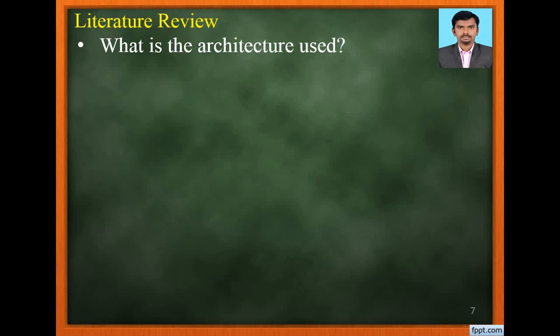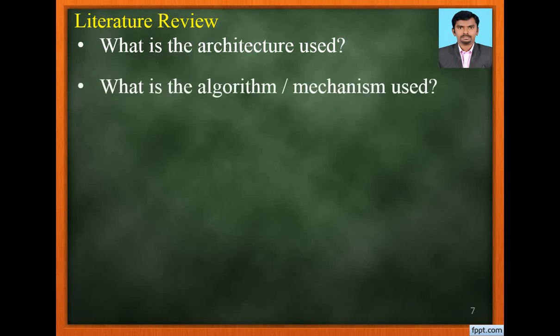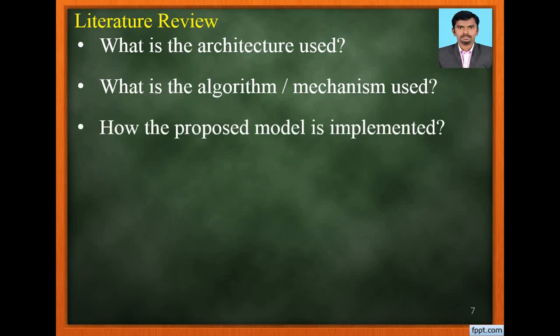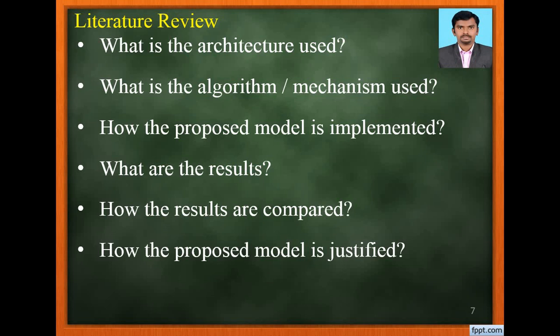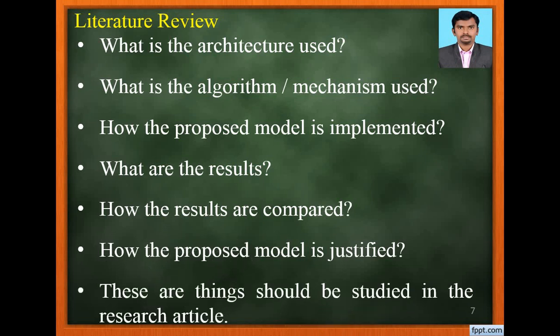What is the architecture used? What is the algorithm or mechanism used? How is the proposed model implemented? What are the results? How are the results compared? How is the proposed model justified? These are the important details of every research article which should be studied by every researcher for writing the literature review.